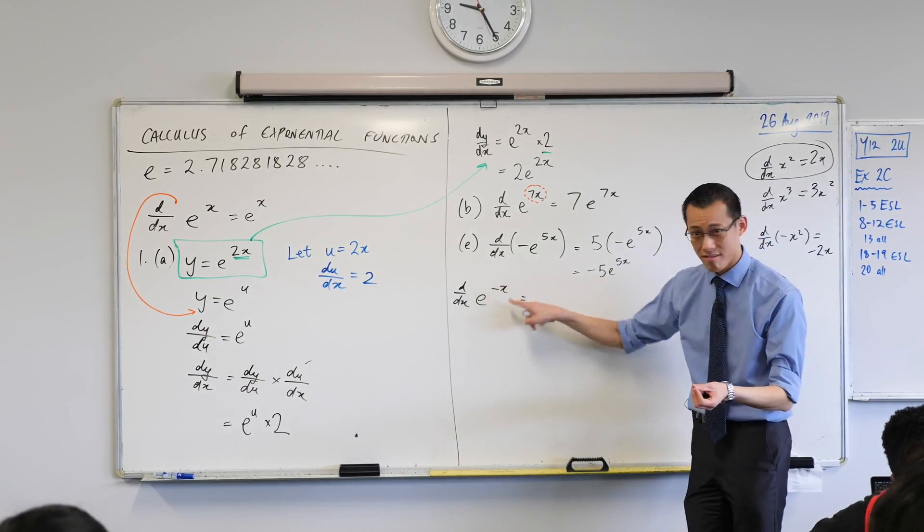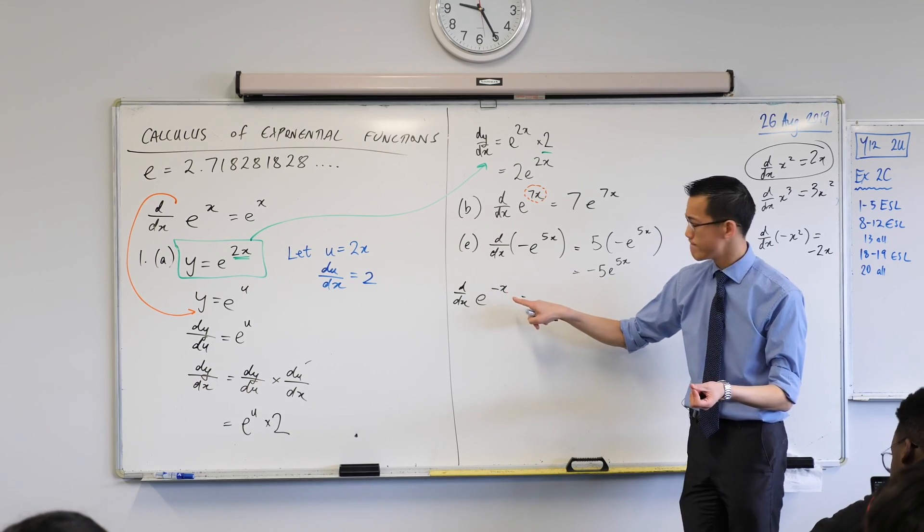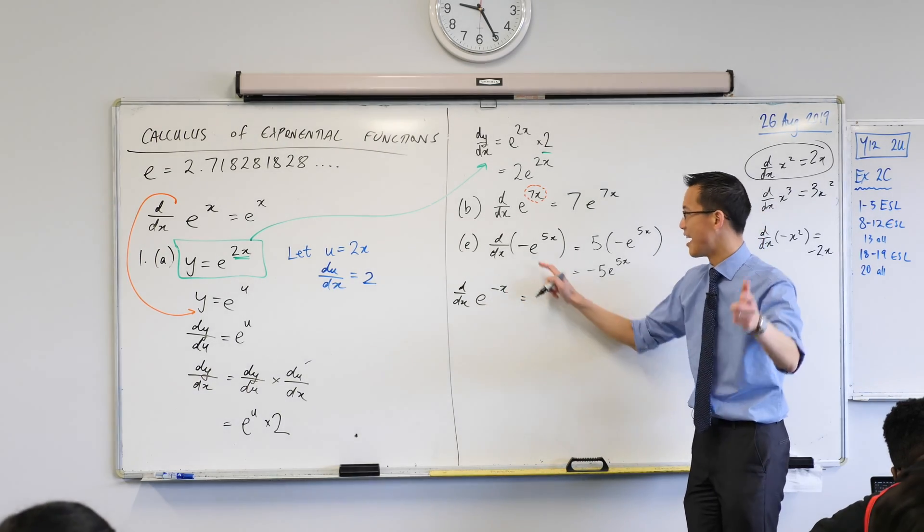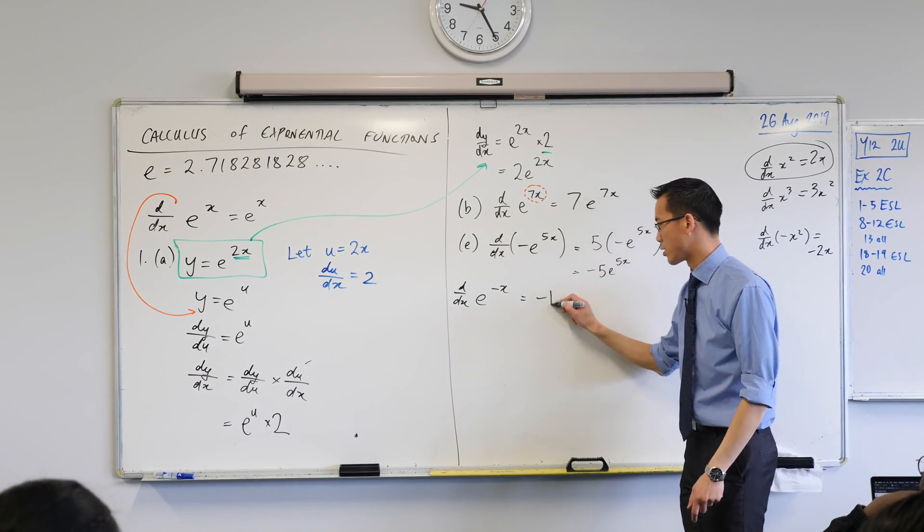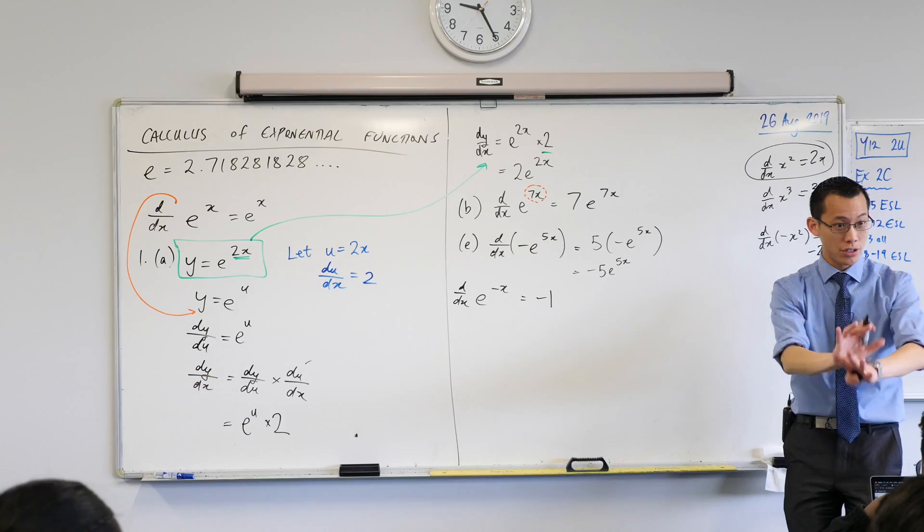So what's its derivative? Just that guy's derivative. It's minus one isn't it? Just like this one was five and this one was two and this one was seven. So in this case it's minus one. There's the inside function. Done.